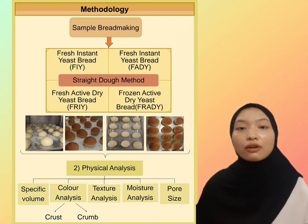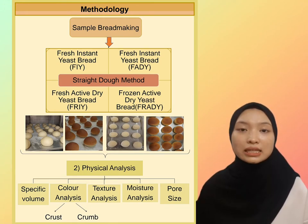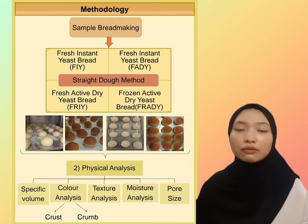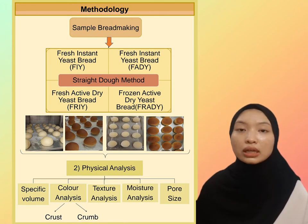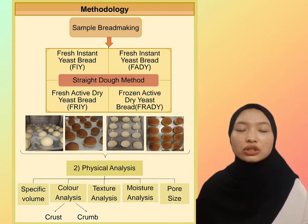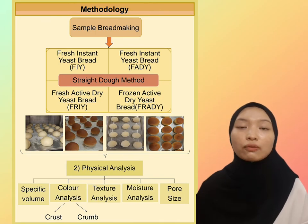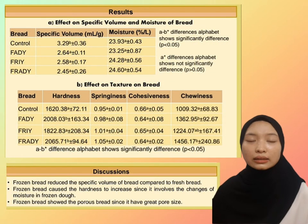Through this research project, four bread samples were prepared: fresh instant yeast bread as a control, fresh active dry yeast, frozen instant yeast, and frozen active dry yeast bread samples. Physical analysis was conducted to analyze physical properties such as specific volume, color, moisture, texture, and pore size of the bread.